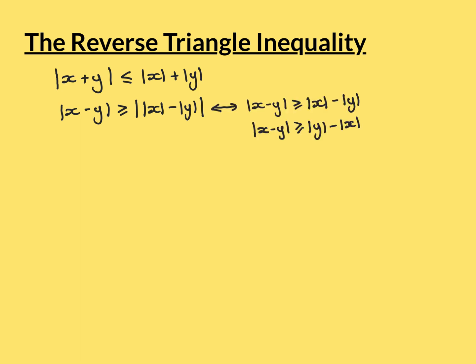Let's now start trying to understand why the main triangle inequality being true implies that the reverse triangle inequality is always true. The way I'm going to do this is to firstly show that the reverse triangle inequality is equivalent to these two statements — a biconditional, a logical equivalence. Those two statements are that mod of x minus y is greater than or equal to mod of x minus mod of y, and that mod of x minus y is greater than or equal to mod of y minus mod of x. If I show that the main triangle inequality implies both of these things, then because these two things are equivalent to the reverse triangle inequality, it will therefore follow.